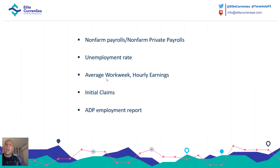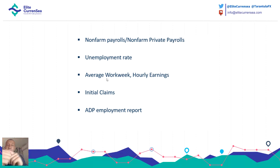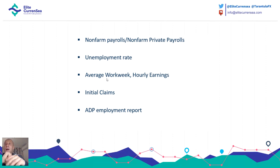Non-Farm Payrolls (NFP) is held each first Friday of the month. The ADP Employment Report gives preliminary results for the NFP. Average work week and average hourly earnings come together with NFP and unemployment data. Pay attention to the first Friday of each month when NFP, average hourly earnings, and unemployment rate are all released simultaneously. ADP precedes NFP and usually happens on Wednesdays, two days before the NFP.